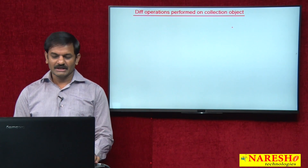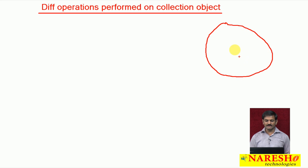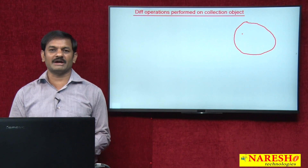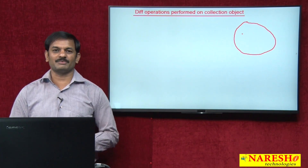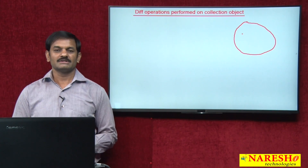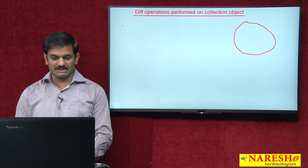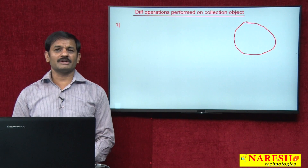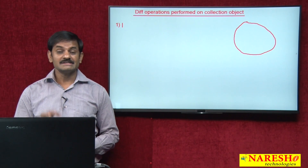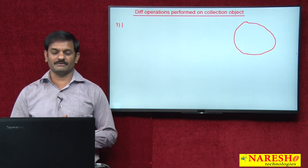A collection is nothing but, in simple words, a group of objects. I have created a collection object — it is nothing but an array object created in the background. If you identify what different operations you can perform on it, then we will develop all those operations in our custom collection and also identify them in Sun Microsystem's given collection. There are totally seven main operations you can perform on a collection.